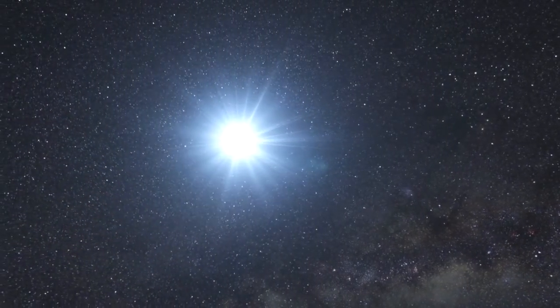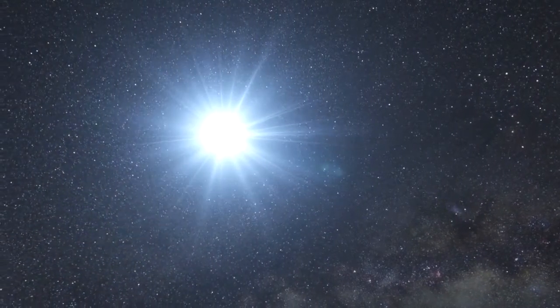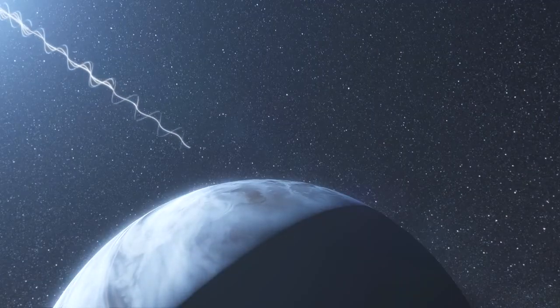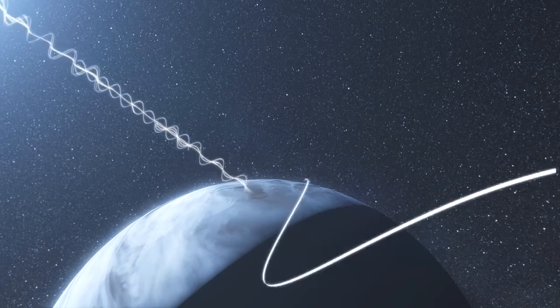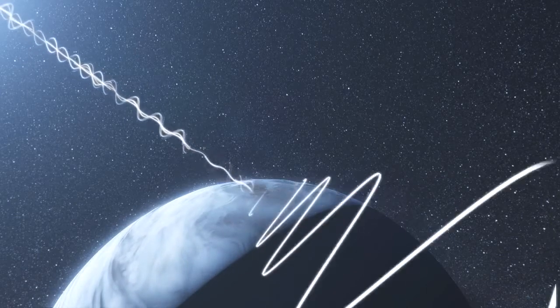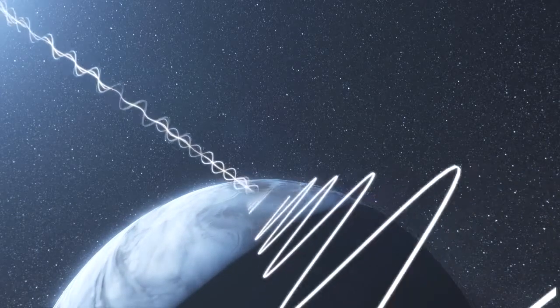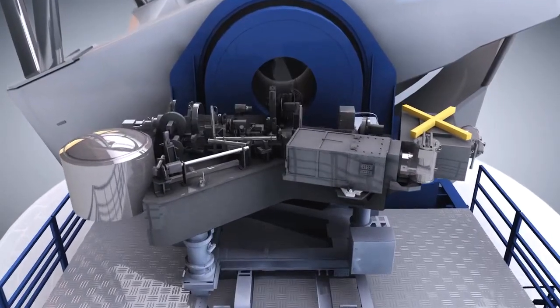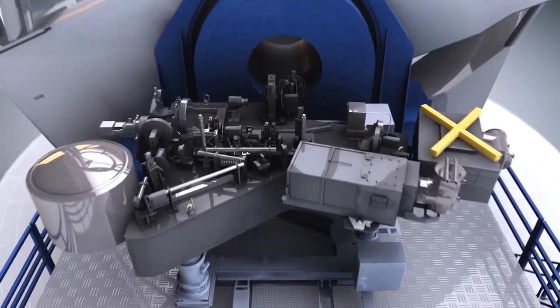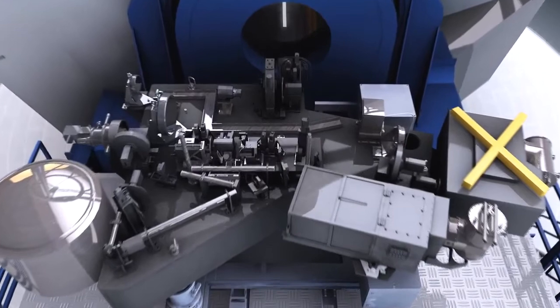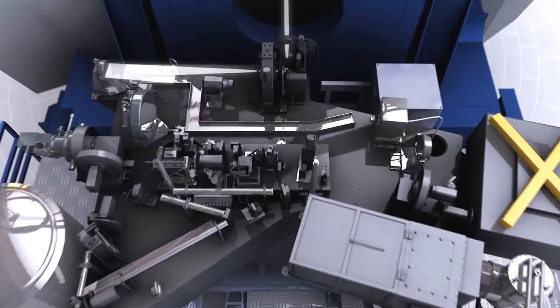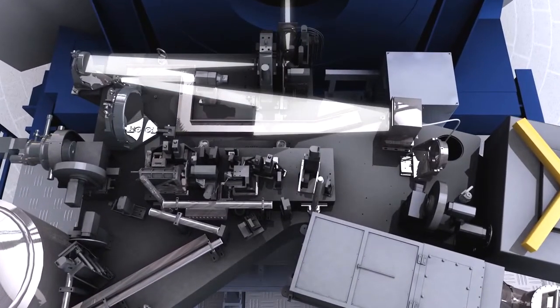But even after all these tricks, a halo of starlight remains, much brighter than the planets that we are looking for. However, this halo is unpolarised, whereas the light from the planets is generally polarised. The new Sphere instrument will be able to pick out a planet's faint signal of polarised light from the unpolarised stellar halo.